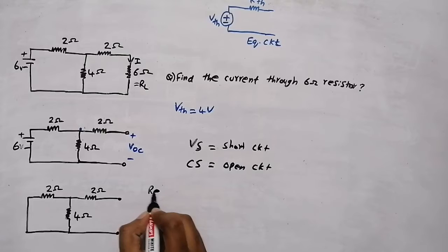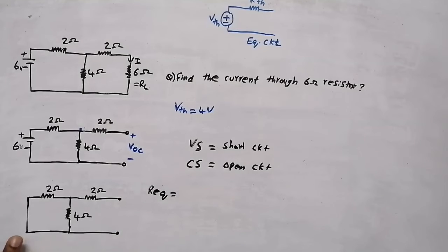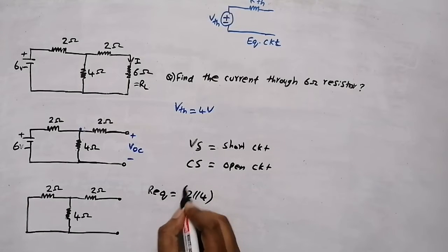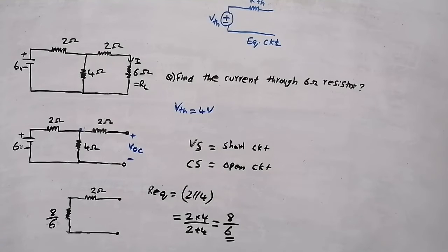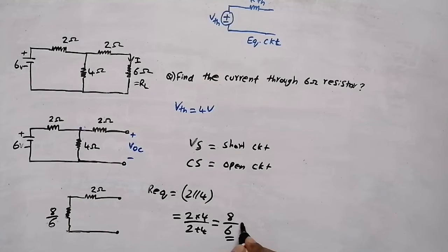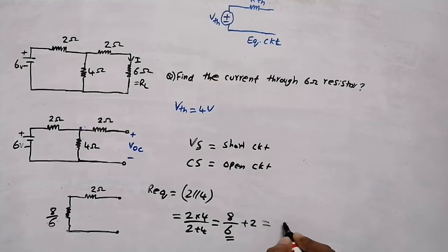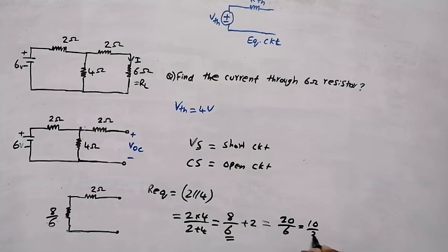Now we need to find the equivalent resistance. The 2 ohm and 4 ohm resistors are in parallel, so: (2 × 4) / (2 + 4) = 8 / 6. This 8/6 ohm resistor is in series with the 2 ohm resistor, so: 8/6 + 2 = (8 + 12) / 6 = 20/6 = 10/3, which is approximately 3.33 ohm.